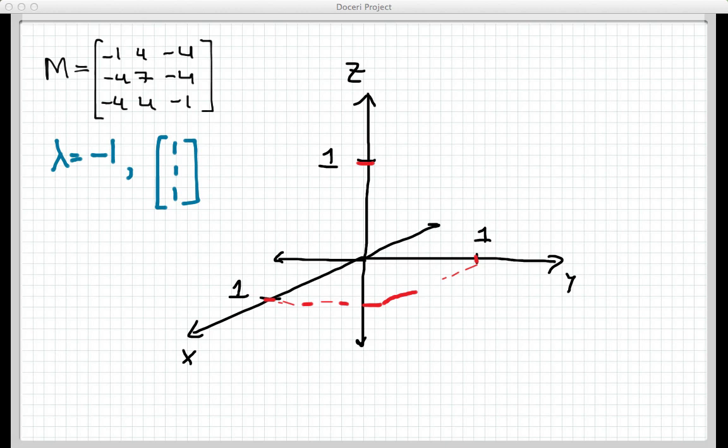and this vector would point up, and this is the shadow that it would leave here in the xy plane. So that's the vector [1, 1, 1].